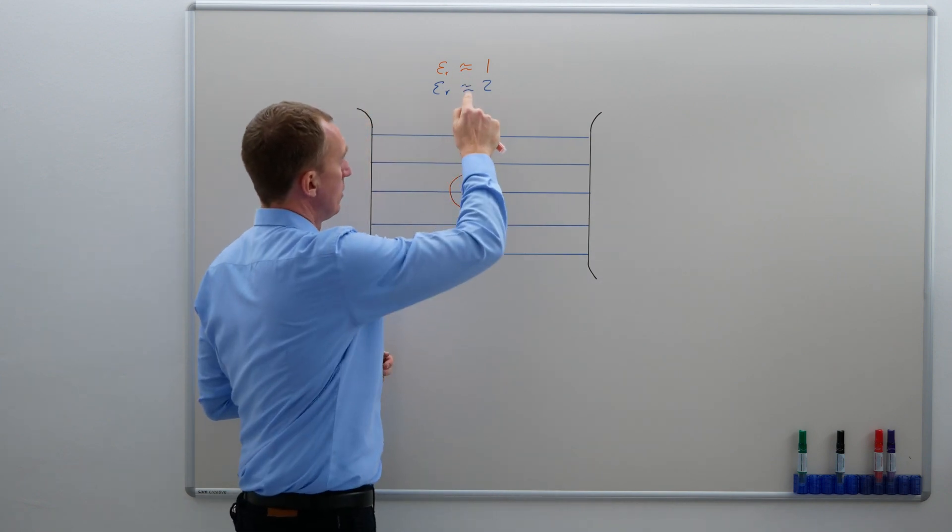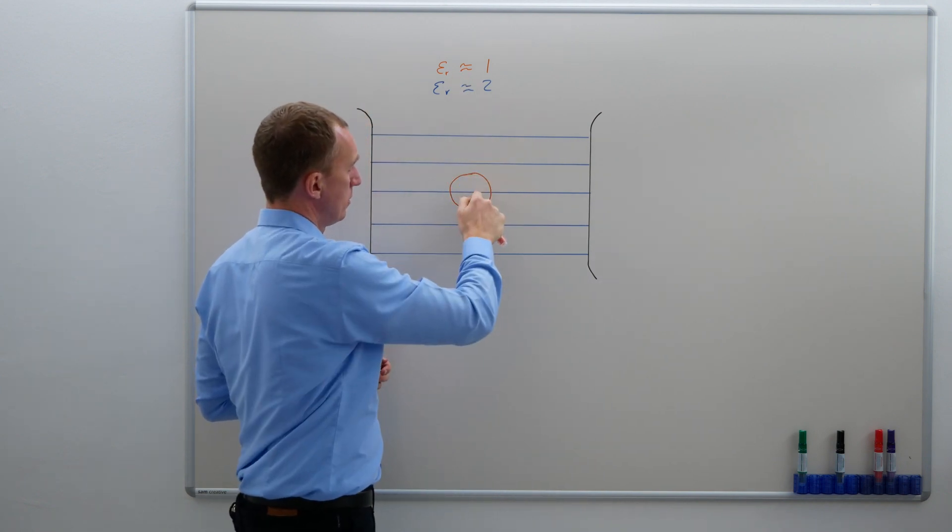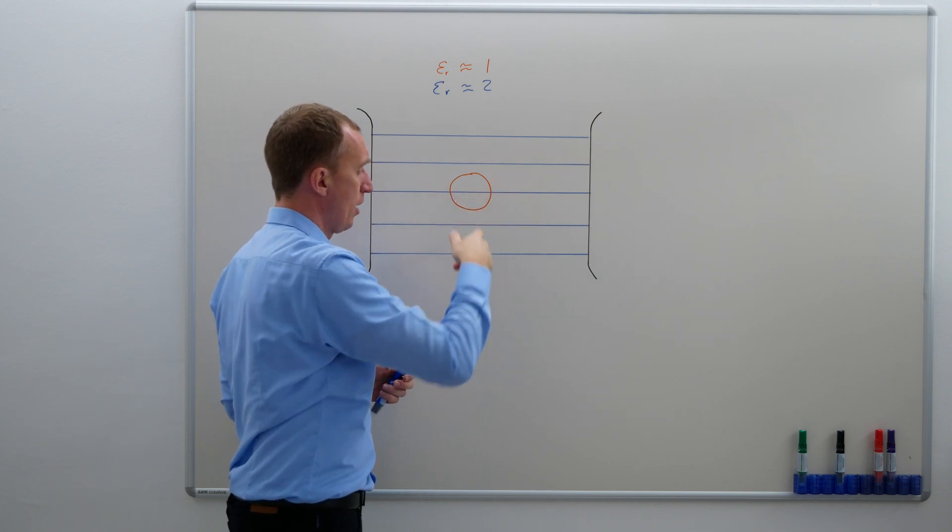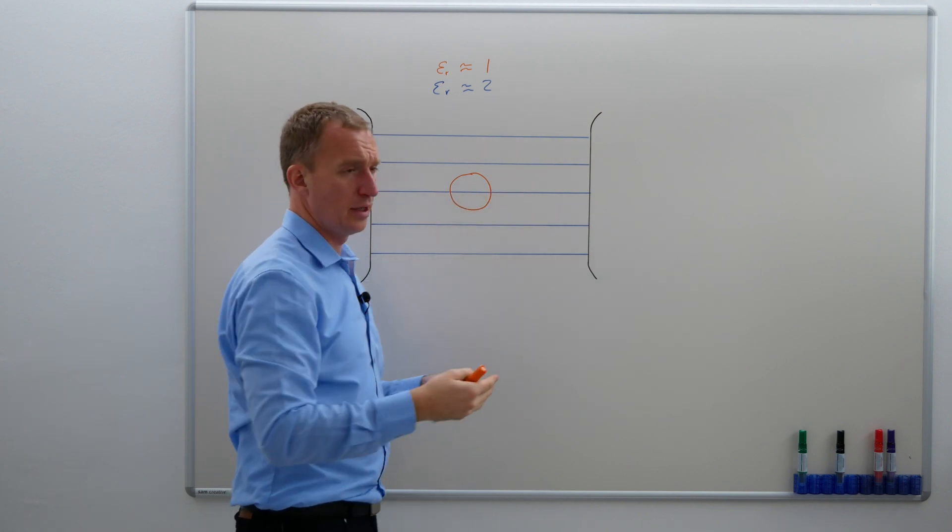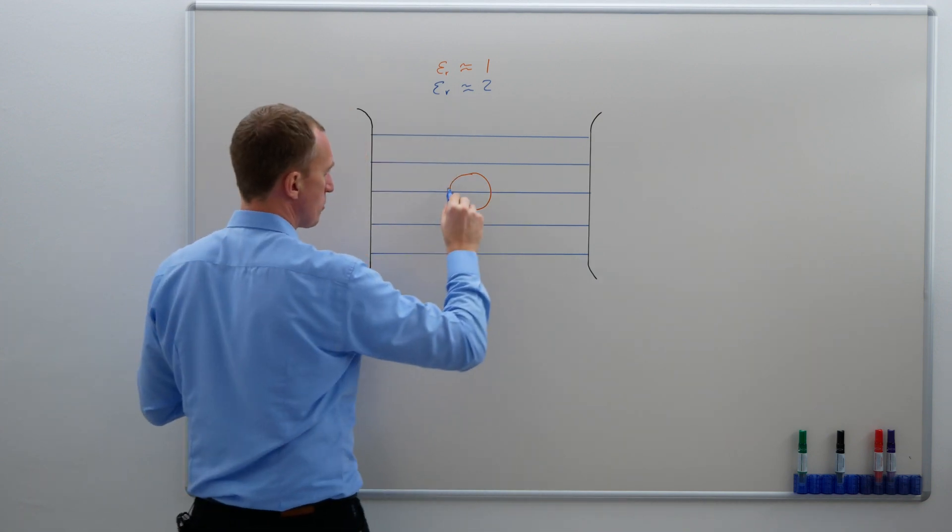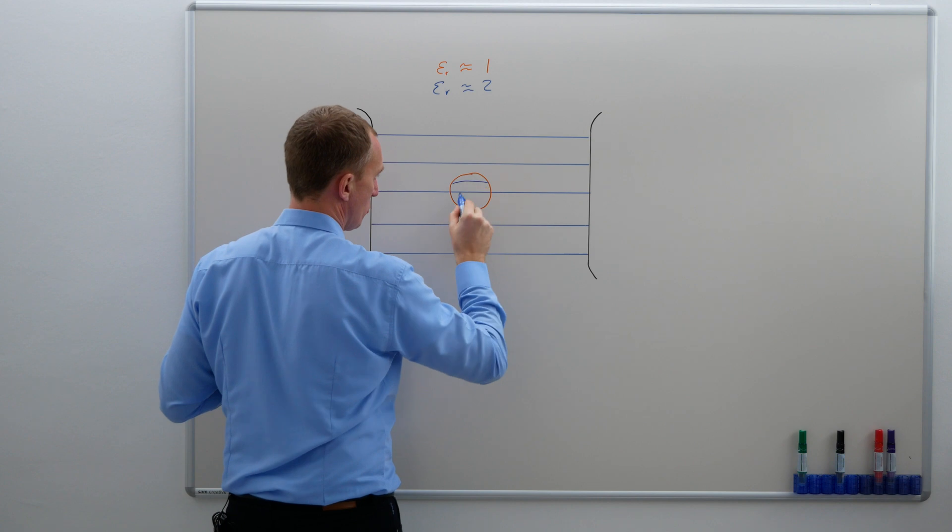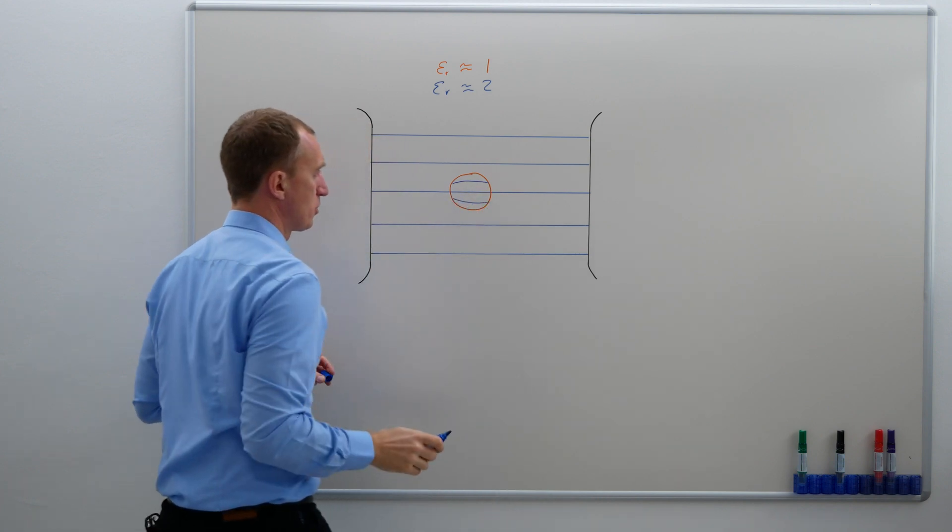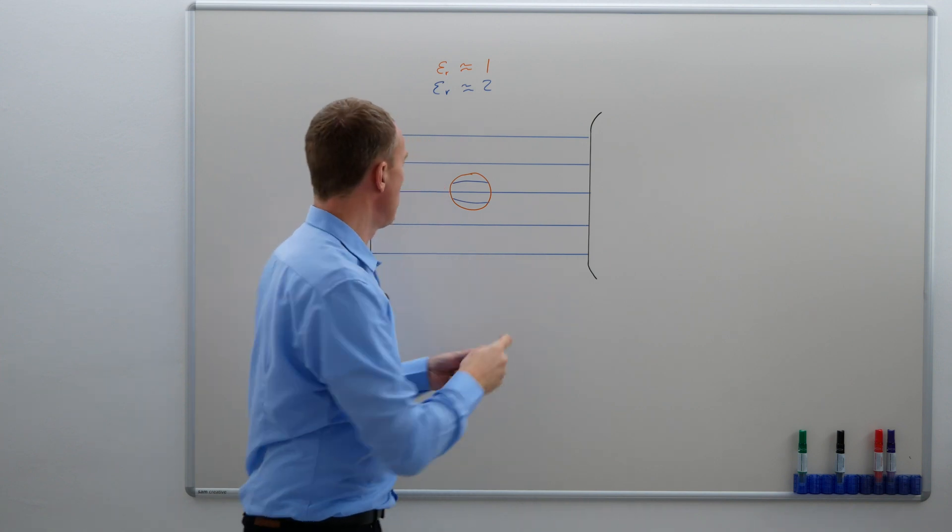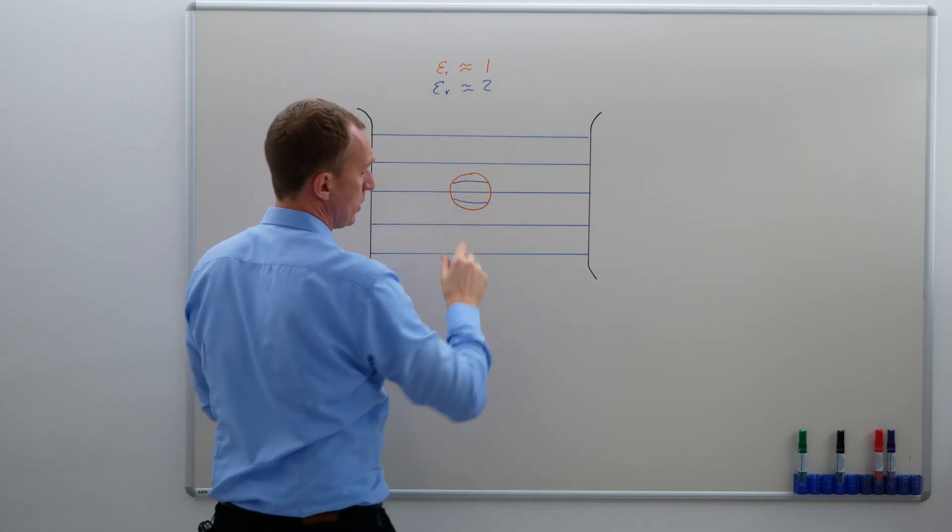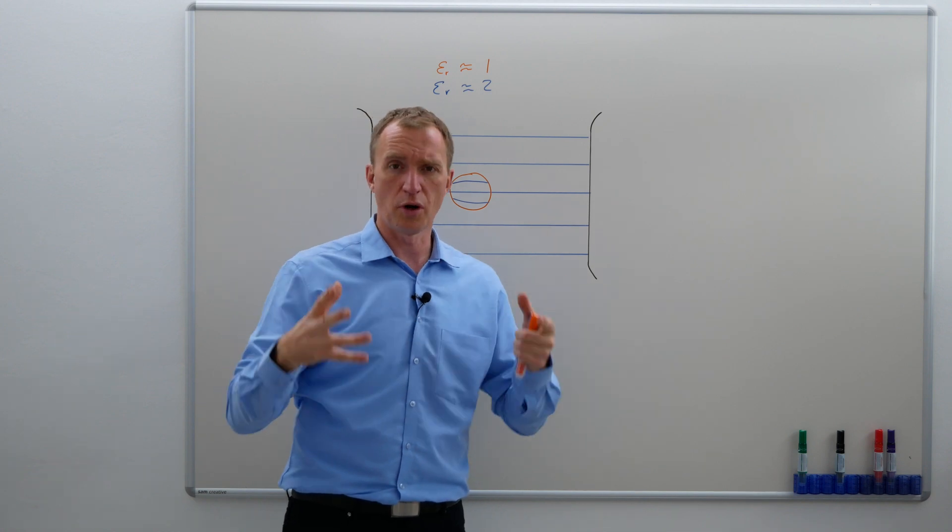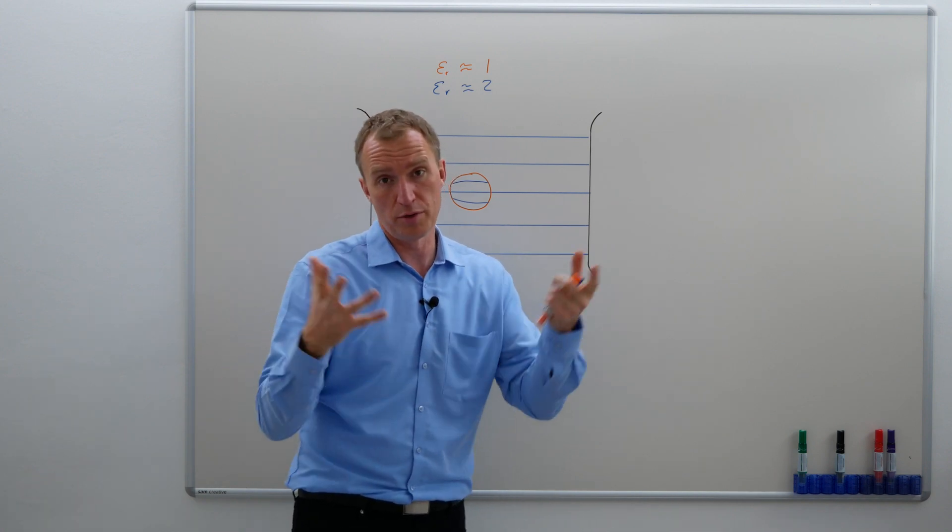If the epsilon_r in here, out here, is twice as big as in here, so this is only half of it, we will actually have an electric field that is higher. And this could be symbolized with two extra electric field lines. Now the distance is only half of them. Which means that the outer electric field will be changed as well.